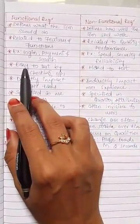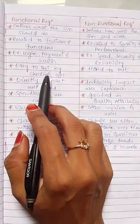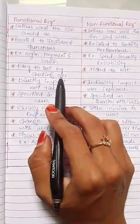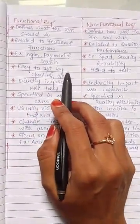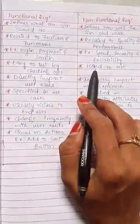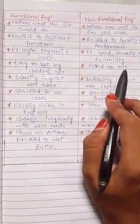Functional requirements are easy to test by checking outputs. We can easily test this by checking the outputs. But non-functional requirements are very hard to test.